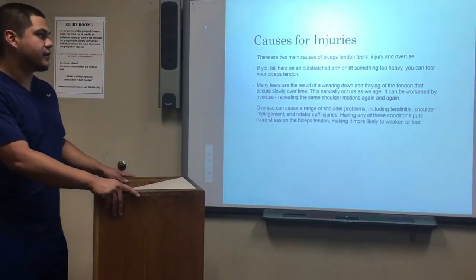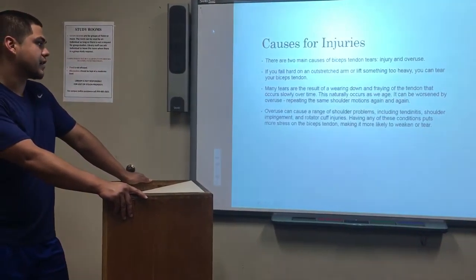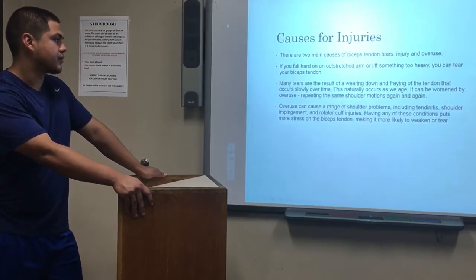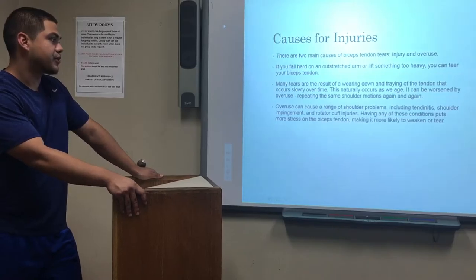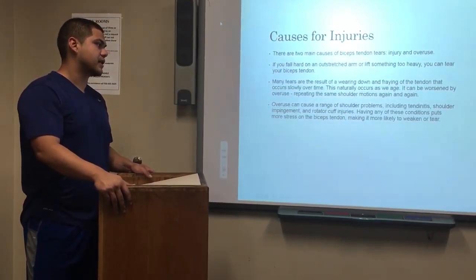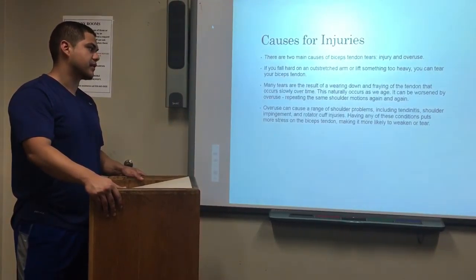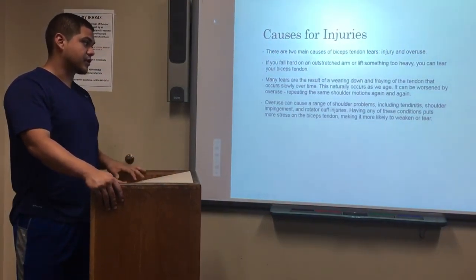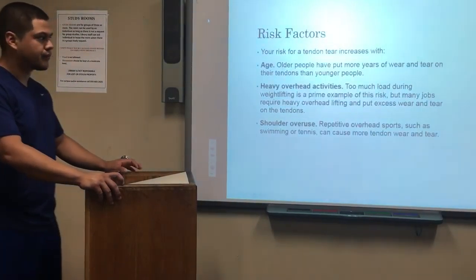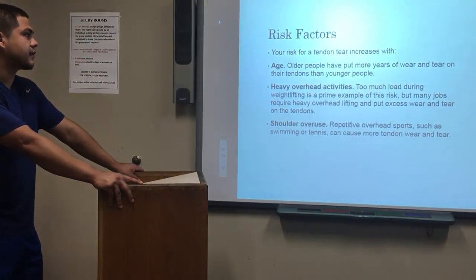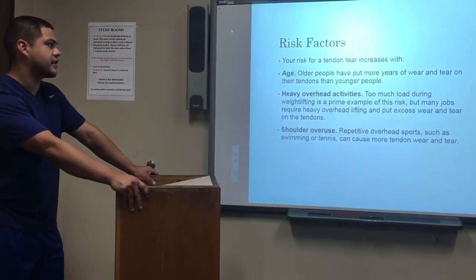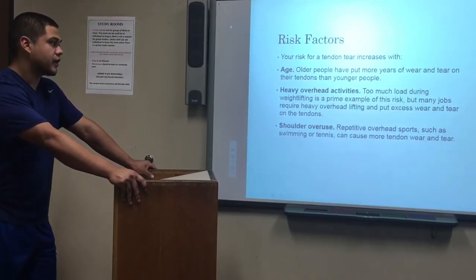There are two main causes of bicep tendon tears: injury and overuse. If you fall hard on an outstretched arm or lift something too heavy, you can tear your bicep tendon. Many tears result from wearing down and fraying of the tendon that occurs slowly over time, which naturally occurs as we age and can be worsened by overuse. Repeating the same shoulder motions can cause tendonitis, shoulder impingement, and rotator cuff injuries, all of which put more stress on the bicep tendon, making it more likely to weaken and tear.